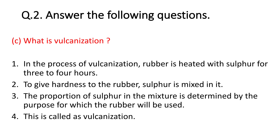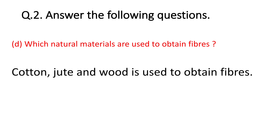Students, note down these answers in your notebook — you can pause the video and write the answers. The next question: which natural materials are used to obtain fibers? Cotton, jute and wood are used to obtain fibers, because wood is the material from which many synthetic threads are prepared. So wood is also a natural material used to create threads or fibers.